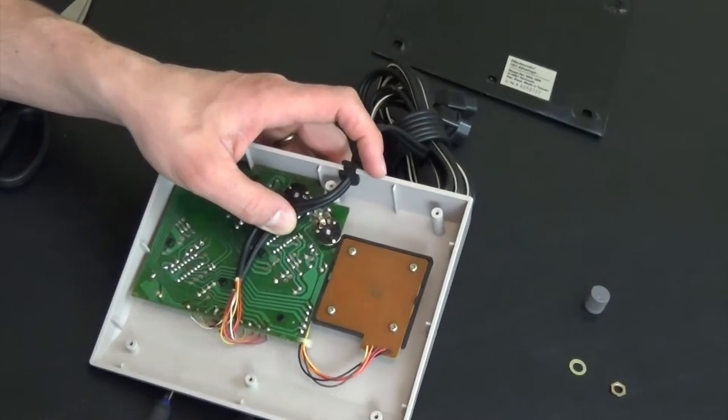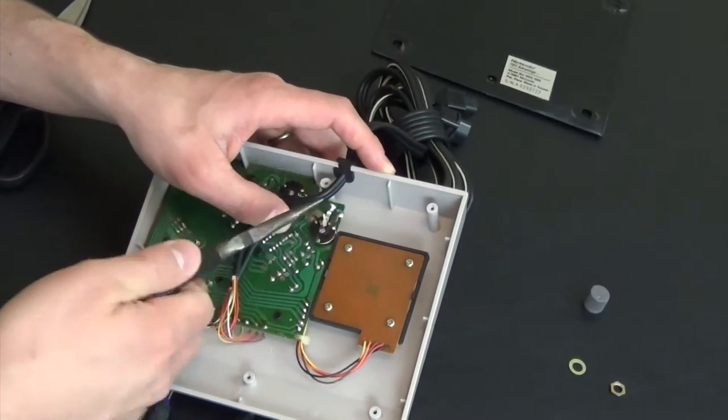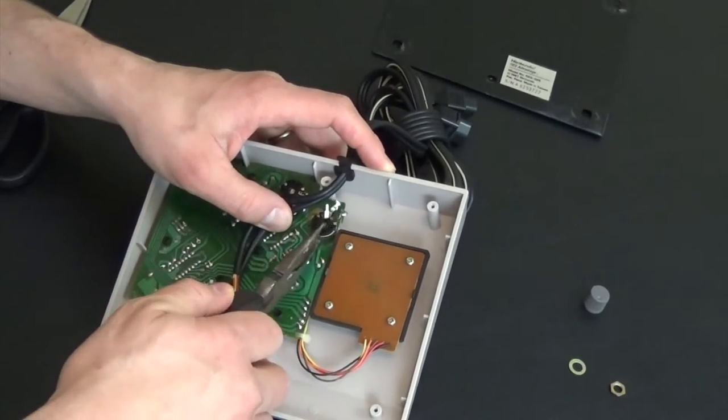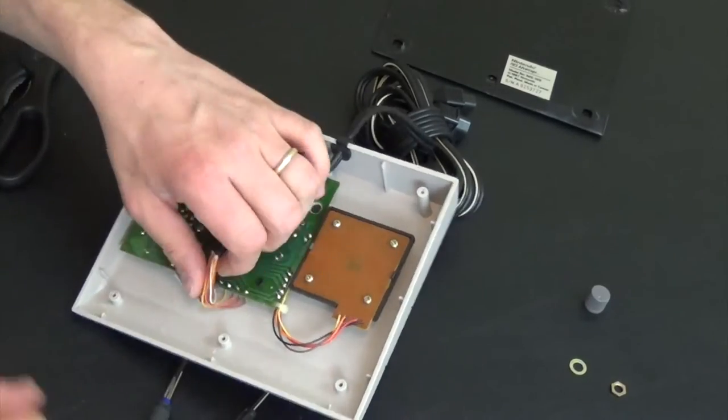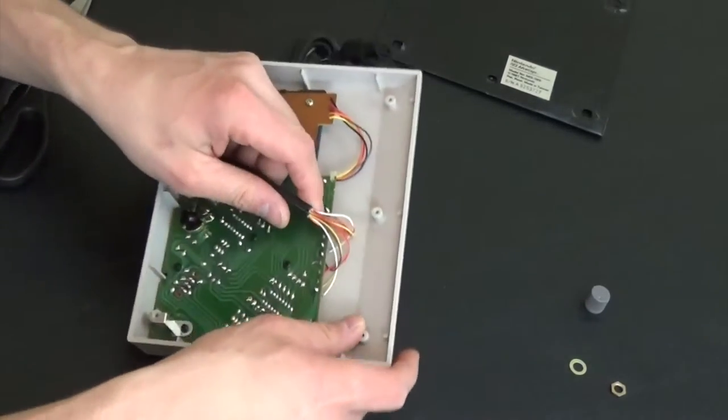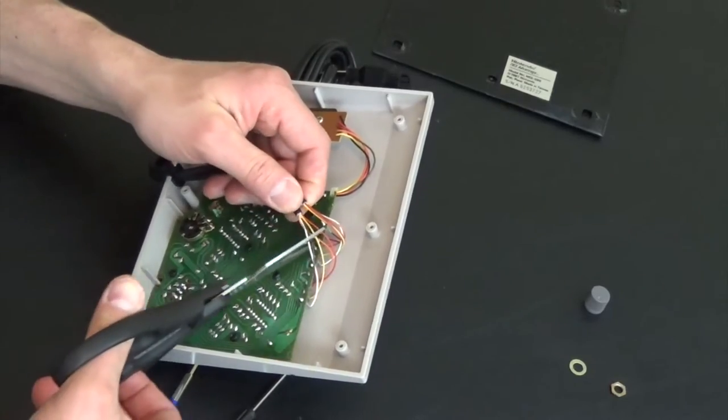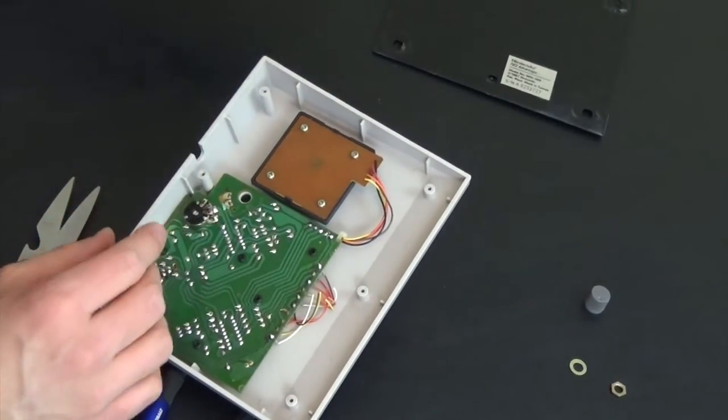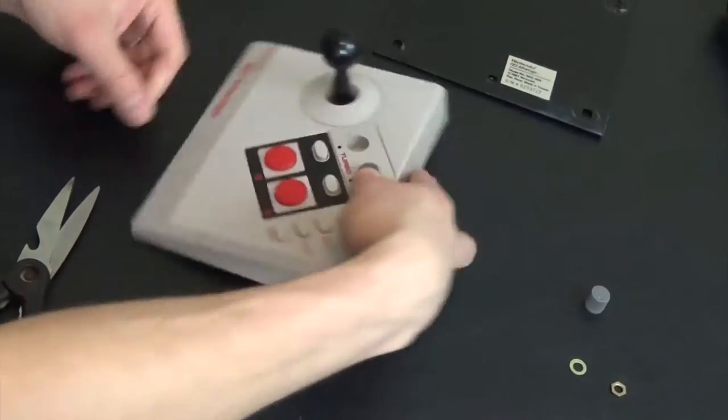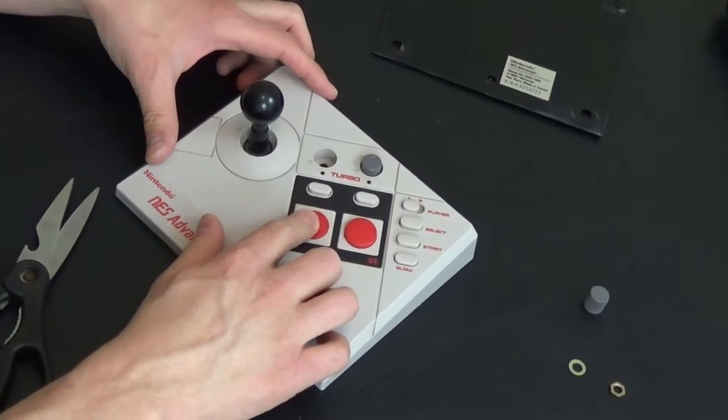Next turn your NES Advantage over and remove the capacitor located under the turbo button. Finally take a pair of scissors and go ahead and cut the cord from the NES Advantage so it won't be in your way. This will now serve as the base to your lamp.